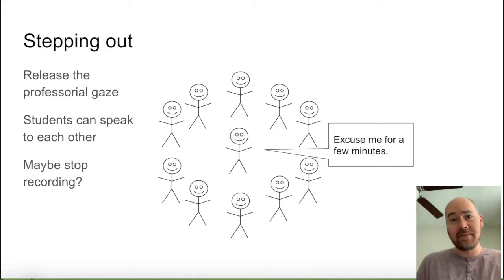One way to do this for the professor is just to step out, to conspicuously leave the meeting, and remove everyone from the instructor's gaze. Be explicit and say, I'm stepping out for a few minutes. I'm not going to be observing you. Maybe even mention that you're not going to record for the next few minutes until you come back. And just give the students the opportunity to talk to one another like the professor's not there. And literally, the professor will not be there.